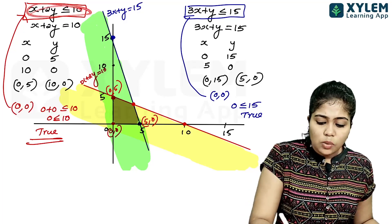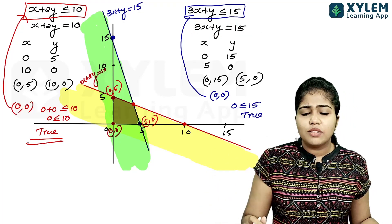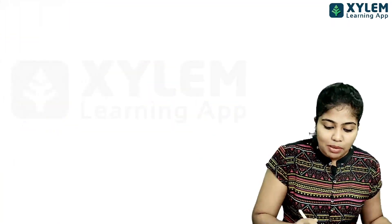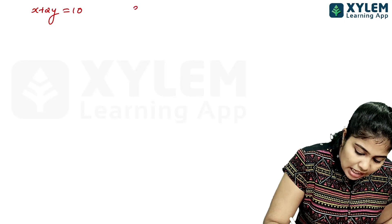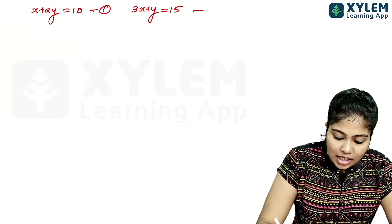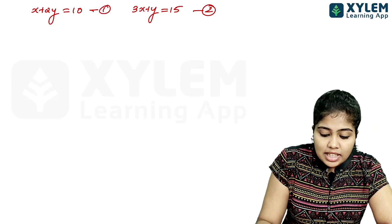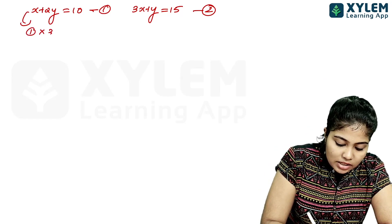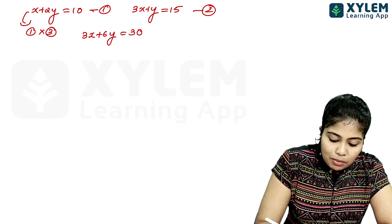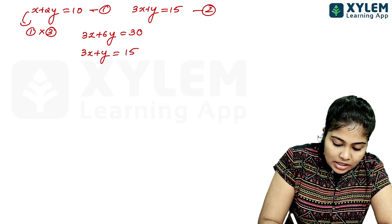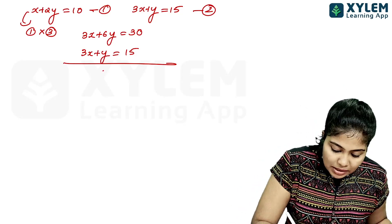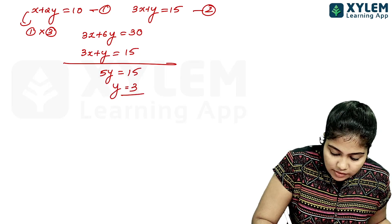To find the fourth corner point, we solve the two equations simultaneously: x plus 2y equal to 10 and 3x plus y equal to 15. Multiplying the first equation by 3 gives 3x plus 6y equal to 30. Subtracting the second equation: 5y equal to 15, so y equal to 3.